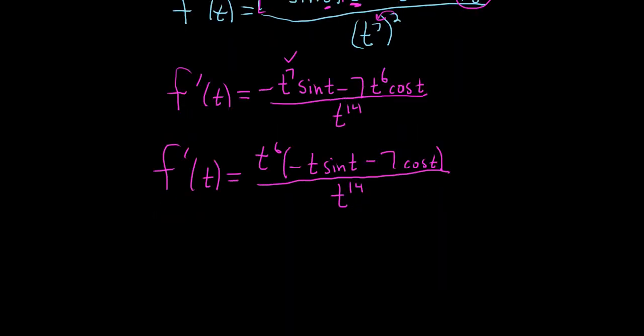Almost there. Last step is to cancel some t's. So f prime of t is equal to, so t to the 6th over t to the 14th, so you're left with t to the 8th on the bottom, right, because 6 of them cancel. So 14 minus 6 is 8, so you're left with 8 copies of t.